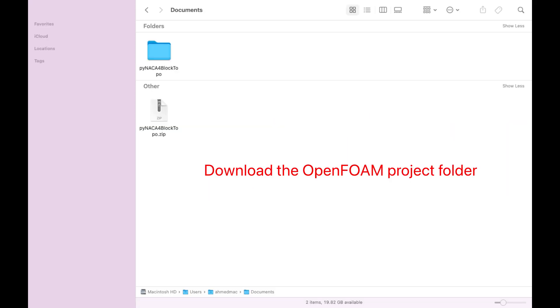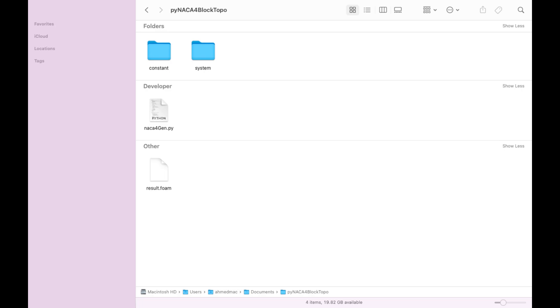To follow up with this tutorial, leave a comment saying interested and include your email address. I'll send you a link to download the project folder so you can follow along step by step. Inside the project folder you will find two subfolders, system and constant. There's also a Python script named NACA4gen which generates the coordinates for the airfoil. Finally, you'll find the result file named result.foam that you can open in ParaView to visualize the mesh.